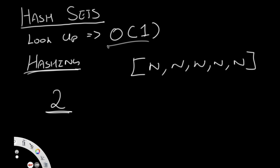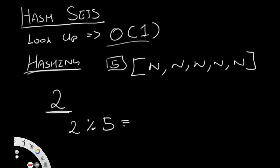To achieve O(1), we run the number through our hashing function. In the real world there are different types of hashing functions, but for this question we'll use a basic one: take the number and perform the modulo operation with the length of the hash set. So 2 mod 5 equals 2, which tells us to go to index 2. We go to index 2 (0, 1, 2) and store the number 2 there. Similarly, 3 mod 5 equals 3, so we go to index 3 and add the number 3.